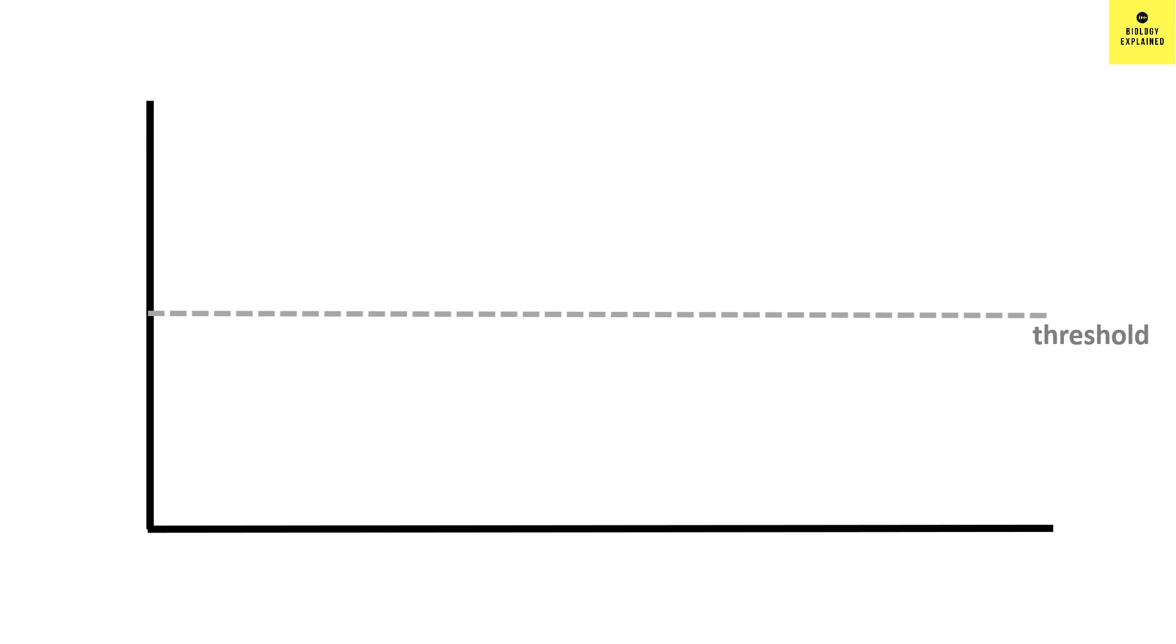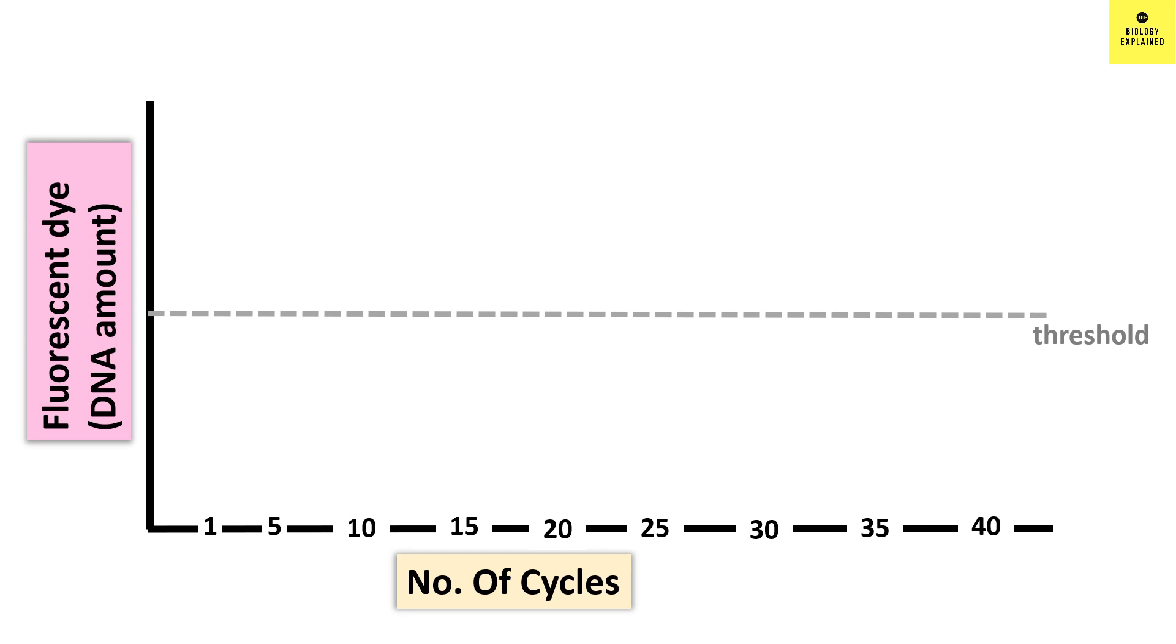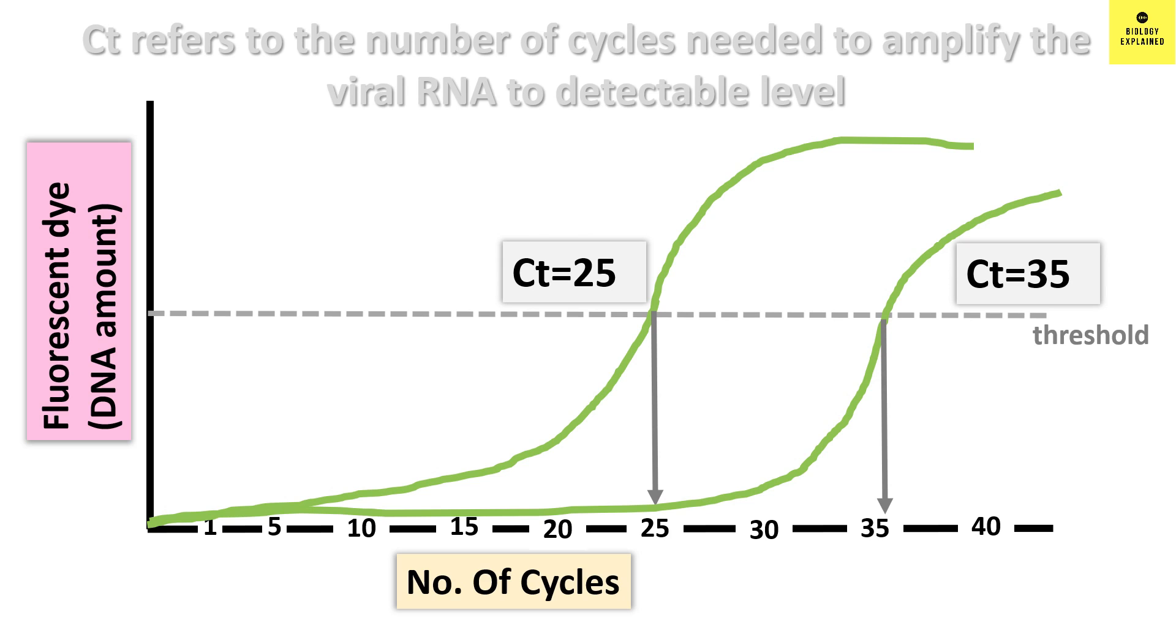Let's consider we have x-axis in which we have the number of cycles and in the y-axis we have the fluorescent dye which tells us about the amount of DNA. Now, let's say sample 1 is amplifying and it crosses the threshold at cycle 25. So the CT value is 25. Again, the sample 2 is amplifying in the similar way and it crosses the threshold at cycle 35. So the CT value is 35. Therefore, CT refers to the number of cycles needed to amplify the viral DNA to a detectable level.